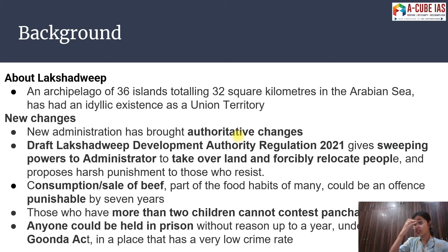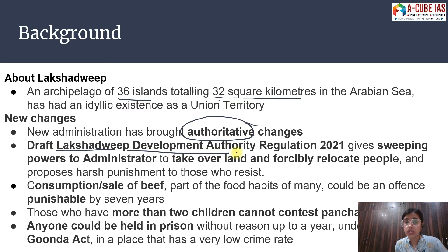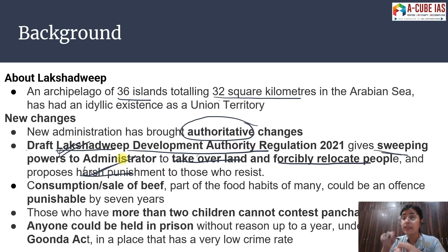Moving ahead, the article talks about Lakshadweep, which has 36 islands and covers 32 square kilometers in the Arabian Sea — it is a Union Territory. New changes have come that are very authoritative in nature. The Lakshadweep Development Authority Regulation 2021 gives very wide powers to the administrator: they can take over land, forcibly relocate people, and impose harsh punishments on those who resist.